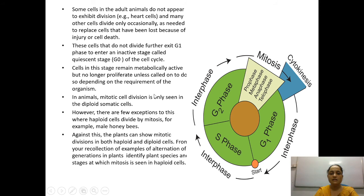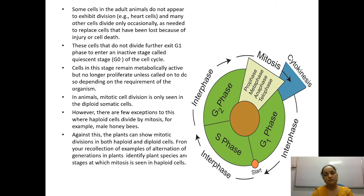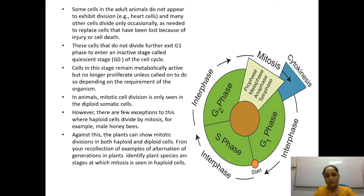In animals, mitotic cell division is only seen in diploid somatic cells. There are two types of cells: somatic cells, which make up the entire body except gametes, and reproductive cells (gametes). Meiosis occurs in reproductive cells, while mitotic division occurs in somatic cells. In this chapter we study both types — mitosis and meiosis. Mitosis always happens in somatic cells and meiosis happens in reproductive cells.